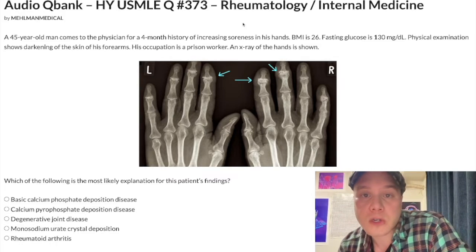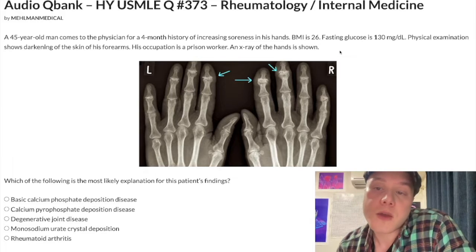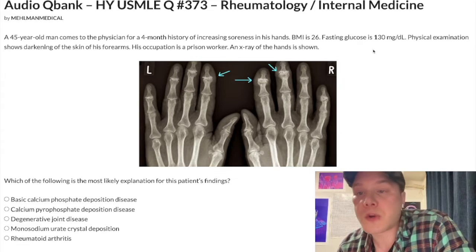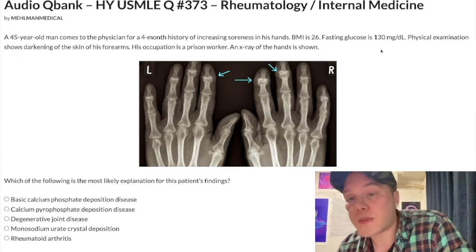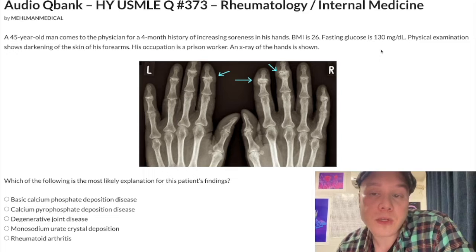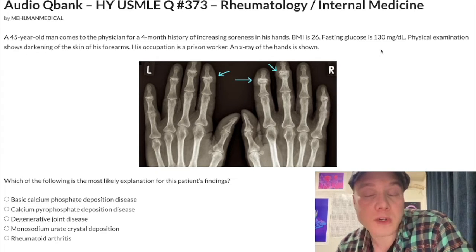So let's start the question: we've got a 45-year-old male with a four-month history of increasing soreness in his hands, BMI 26. Fasting glucose is 130 mg/dL. Normal should be 72 to 99 mg/dL. Impaired fasting glucose is 100 to 125. Diabetes mellitus is defined as two fasting glucose measurements of 126 or greater, or any one random glucose of 200 mg/dL or greater.